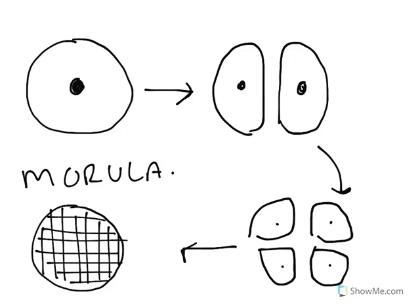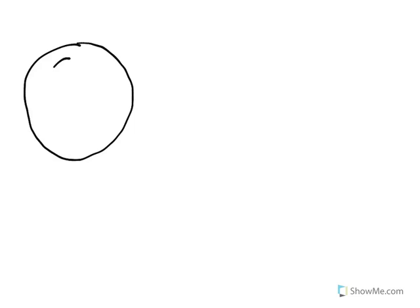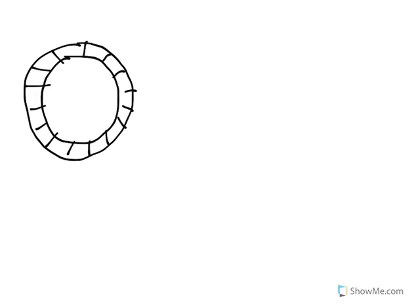The solid morula is actually going to become hollow. That hollow ball of cells is known as a blastula. Here is a blastula — it's a hollow ball of cells. So, we've converted a solid ball to a hollow ball, and that's called a blastula.